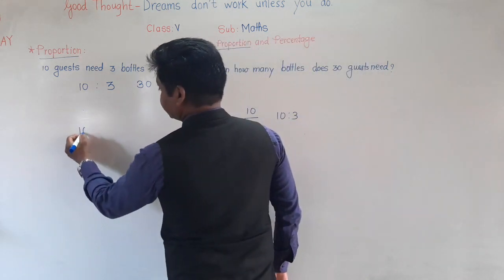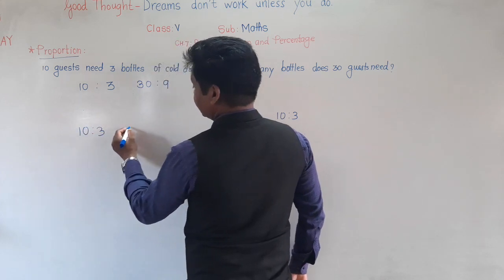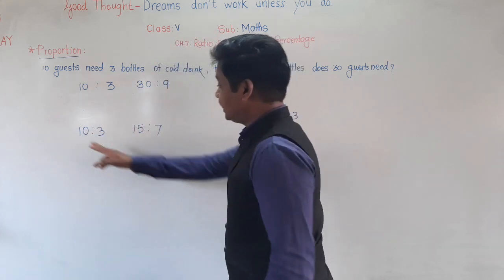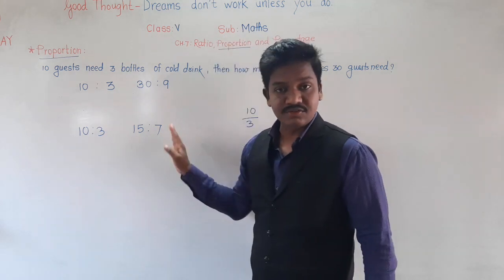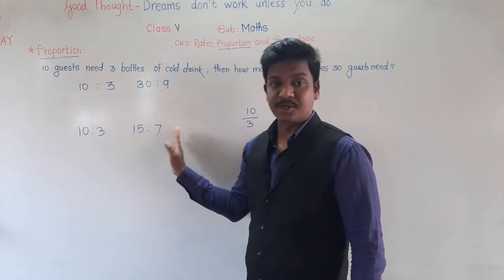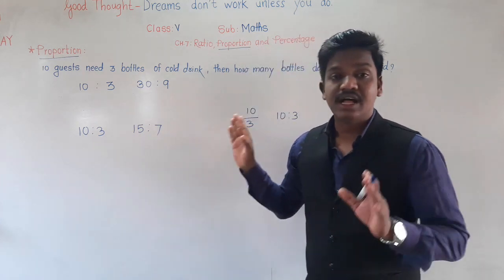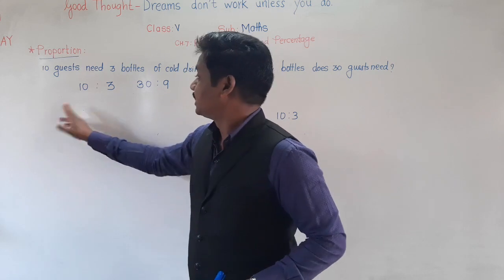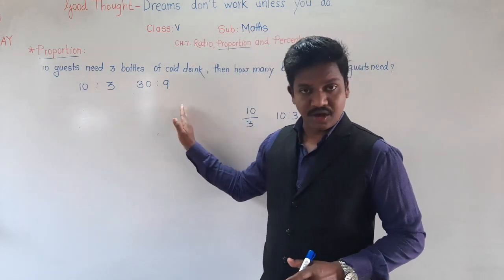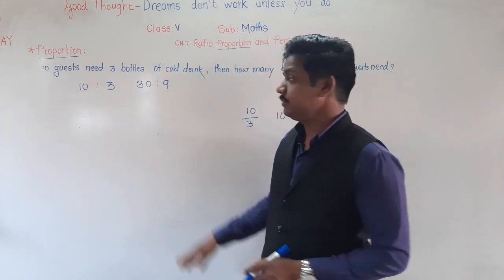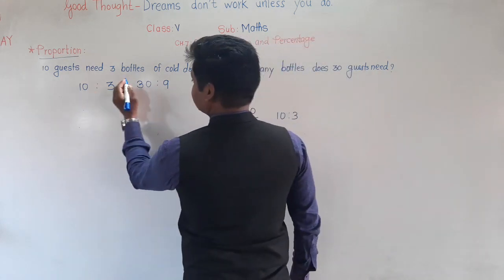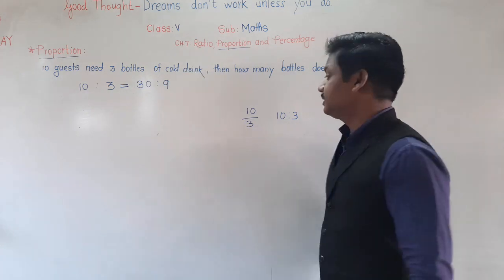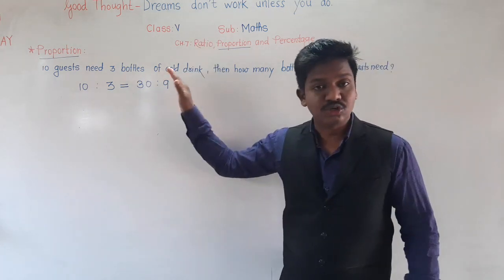Suppose there is 10 is to 3 and 15 is to 7 — are they equal? No. So they are not in proportion because these two ratios are not equal. But 10 is to 3 and 30 is to 9 are equal, so we say that they are in proportion.